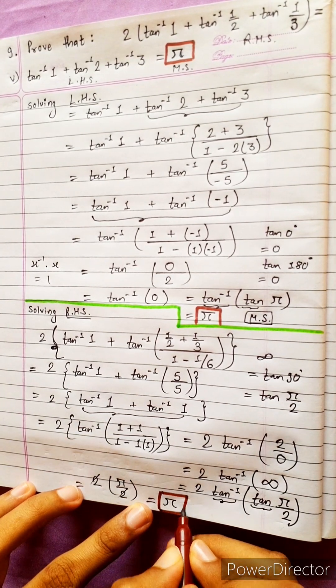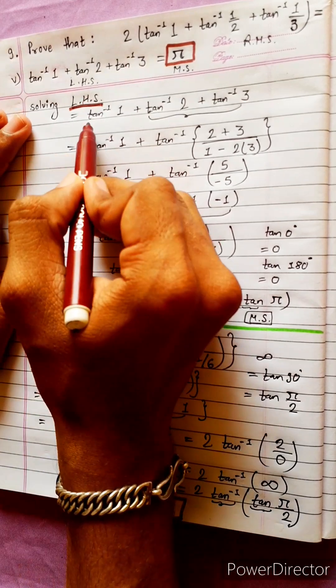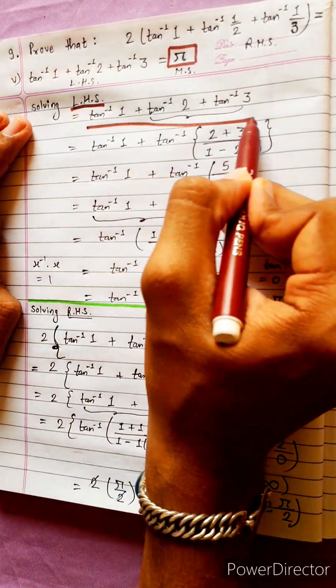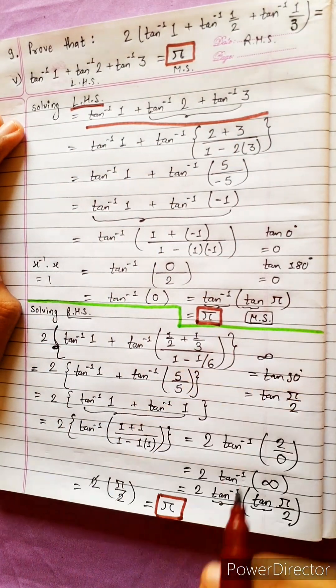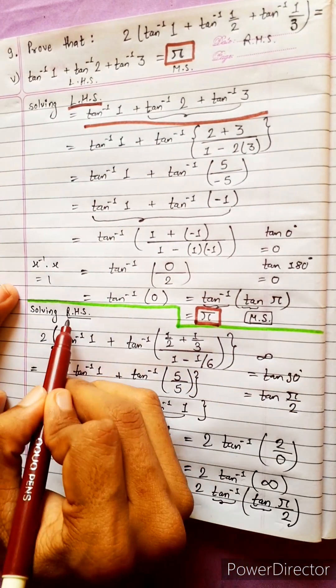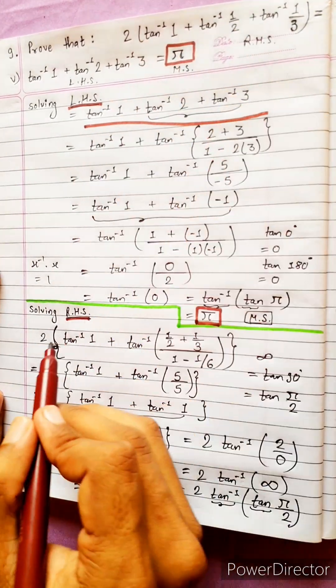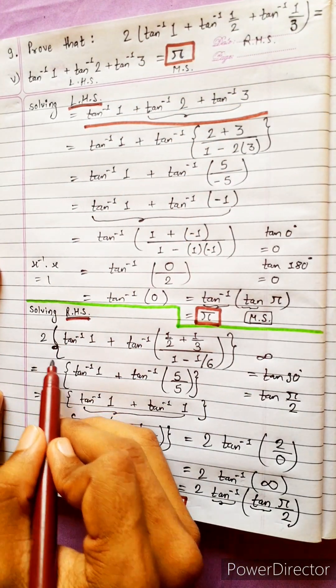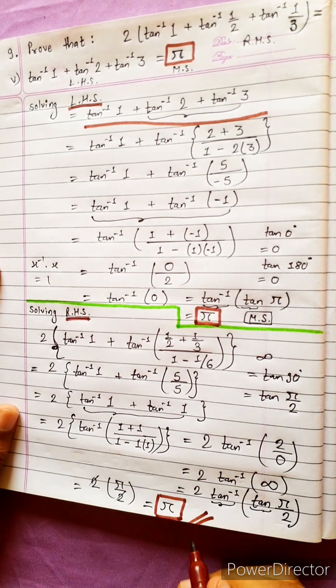So to summarize: solving the LHS, we got the middle side π. And solving the RHS, we also got the middle side π. Therefore LHS = RHS = π, which is what we needed to prove.